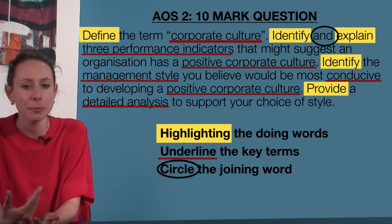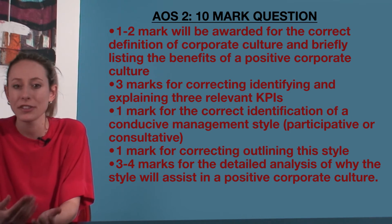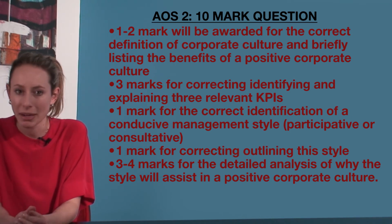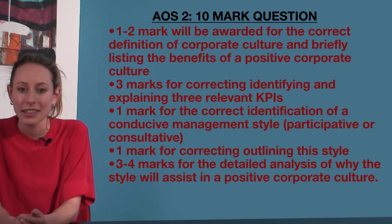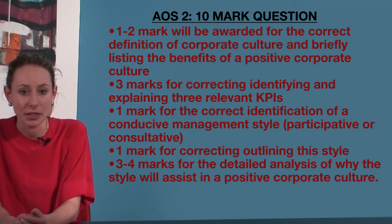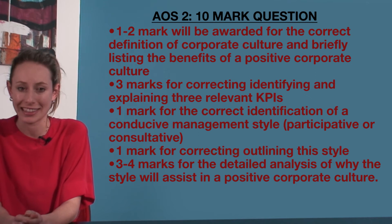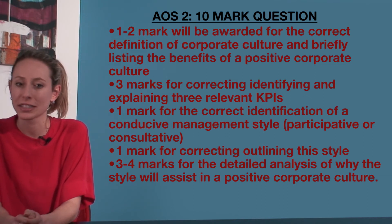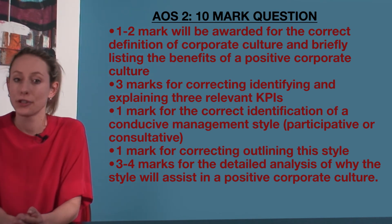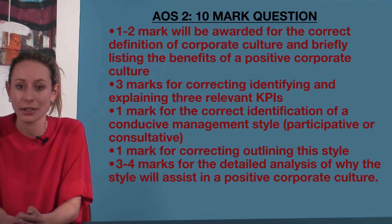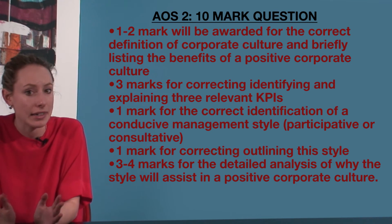Looking at this question, it could be interpreted that one to two marks will be awarded for the correct definition of corporate culture and briefly listing the benefits of a positive corporate culture. Three marks for correctly identifying and explaining three relevant KPIs. One mark for the correct identification of a conducive management style — participative or consultative. One mark for correctly outlining the style. Three to four marks for the detailed analysis of why the style will assist in a positive corporate culture. Note that a failure to identify correct KPIs and/or management style might result in no marks being awarded for that section, regardless of a correct explanation.